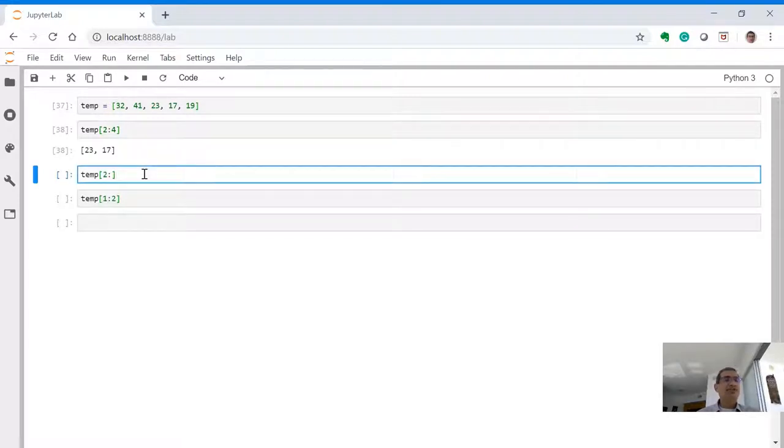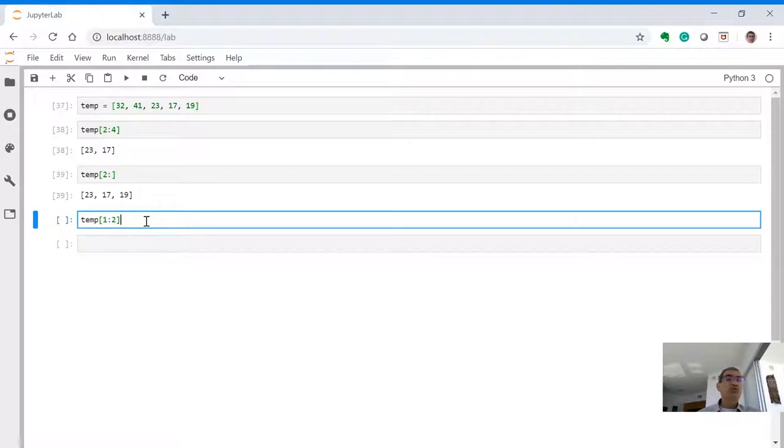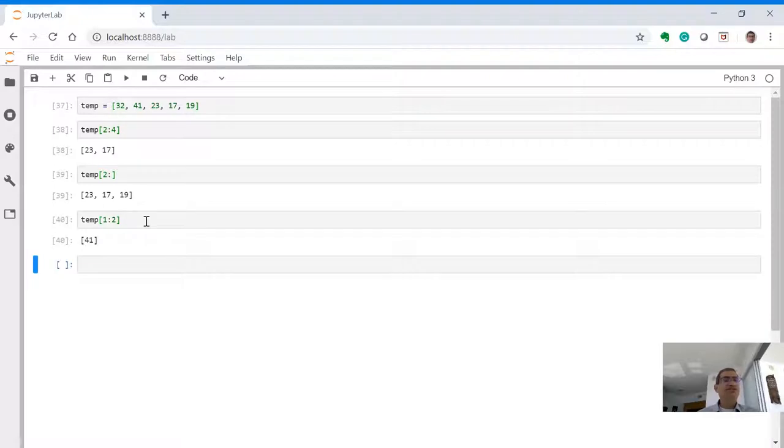Start from the second element and go till the end: temp[2:]. Skip the first 2 and then give me the last 3. Temp[1:2] could be tricky. It is not the very first one. You skip it and start from 41 and go until but not including 23. So there is only one element left. It will just give us 41.